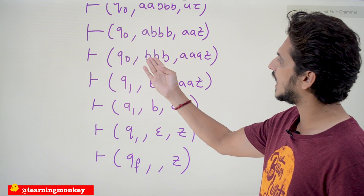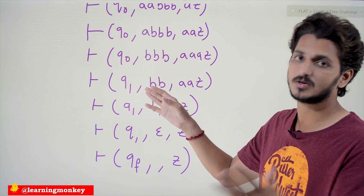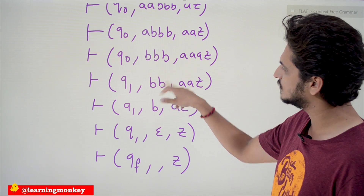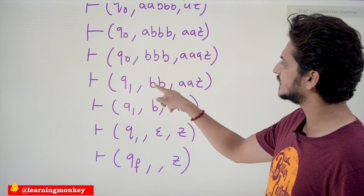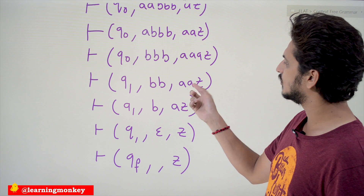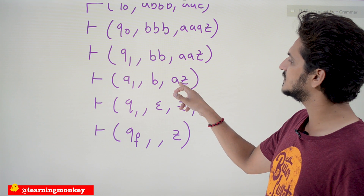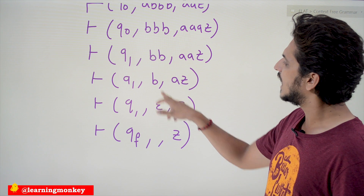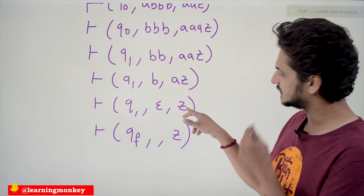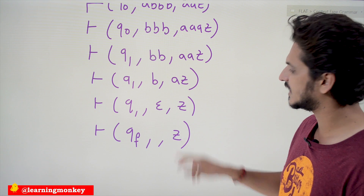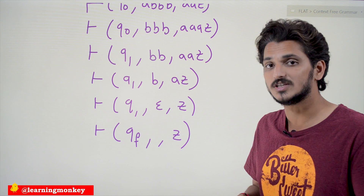'A' is removed from the stack and 'b' is consumed from the input. Remaining input is 'bb', so we get (q1, bb, AAZ). On q1, taking input 'b' with stack top 'A', we pop: (q1, b, AZ). Taking input 'b' again with stack top 'A', we pop: (q1, ε, Z). Since the input is epsilon and stack top is Z, we move to final state qf: (qf, ε, Z). This is how instantaneous description shows the processing of a string on a pushdown automata.